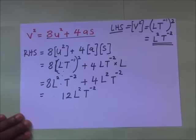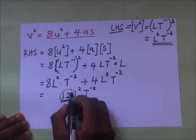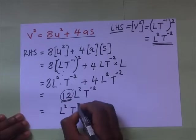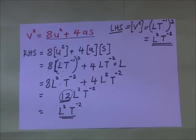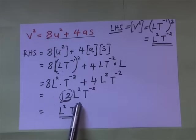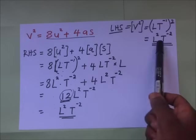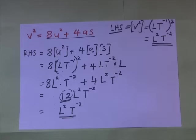As far as dimensions of physical quantities are concerned, constants are dimensionless. So 12L²T⁻² reduces to L²T⁻². Since the right-hand side, L²T⁻², is the same as the left-hand side, L²T⁻², it means that this equation is dimensionally consistent.